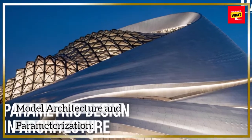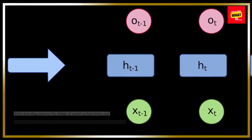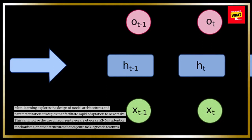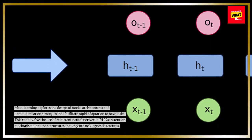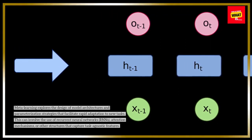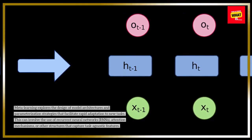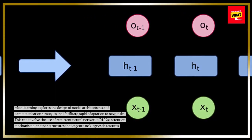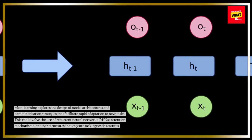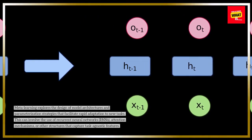Model architecture and parameterization: meta-learning explores the design of model architectures and parameterization strategies that facilitate rapid adaptation to new tasks. This can involve the use of recurrent neural networks (RNNs), attention mechanisms, or other structures that capture task-agnostic features.